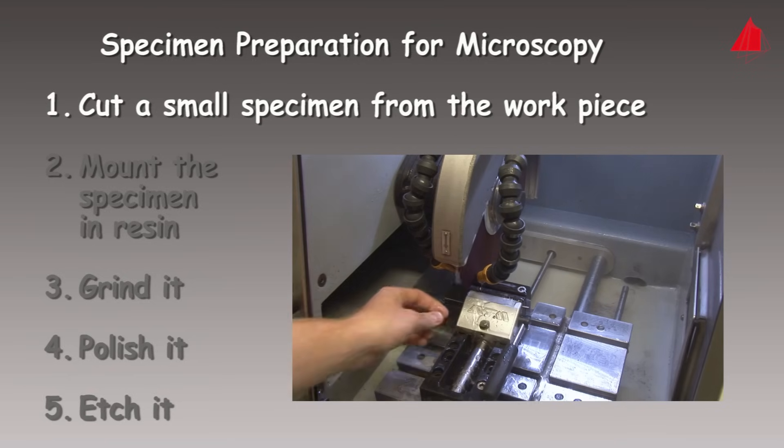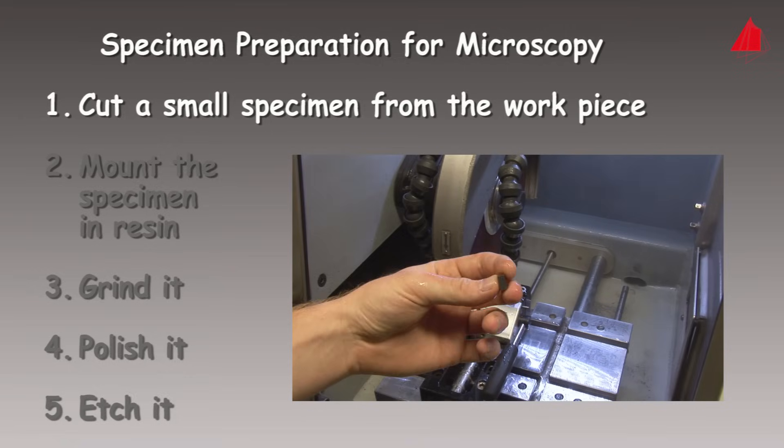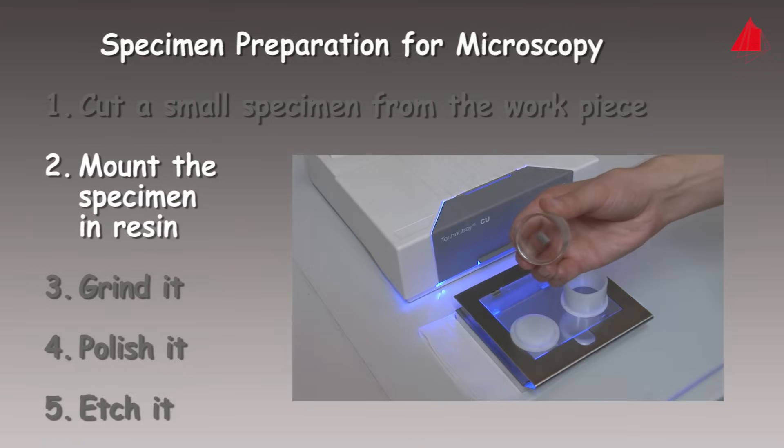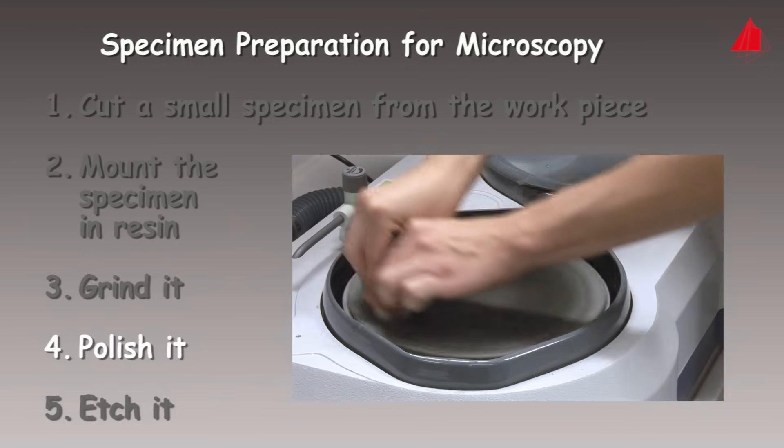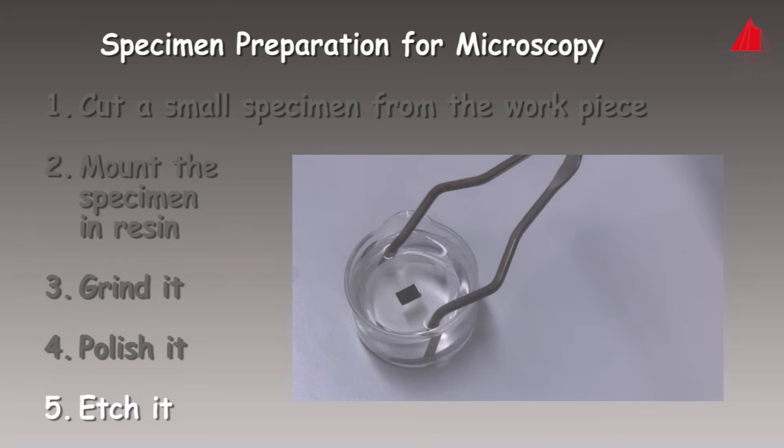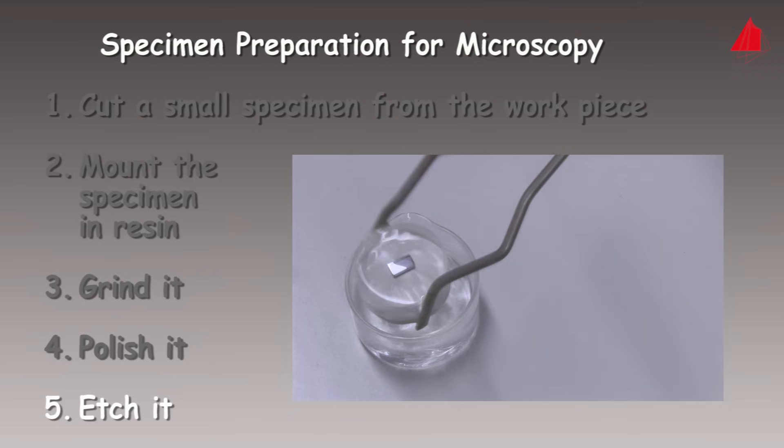First of all, a small specimen has to be cut from the actual workpiece. The specimen is mounted in resin, ground in several stages, polished in several stages and finally etched. Now the specimen is completely prepared and ready for microscopy.